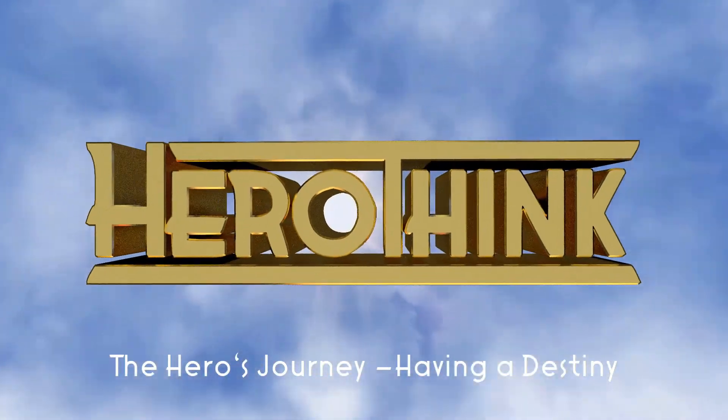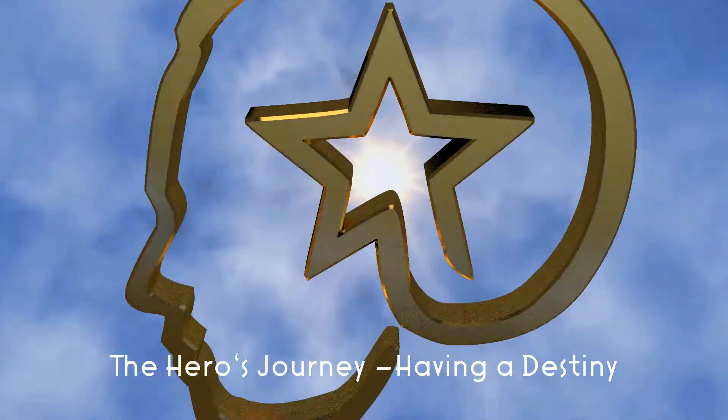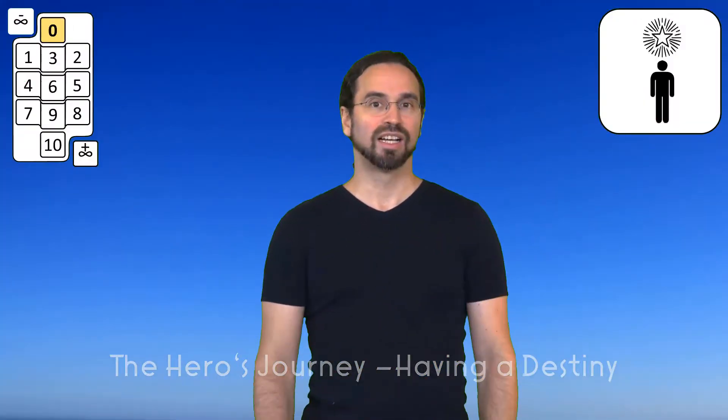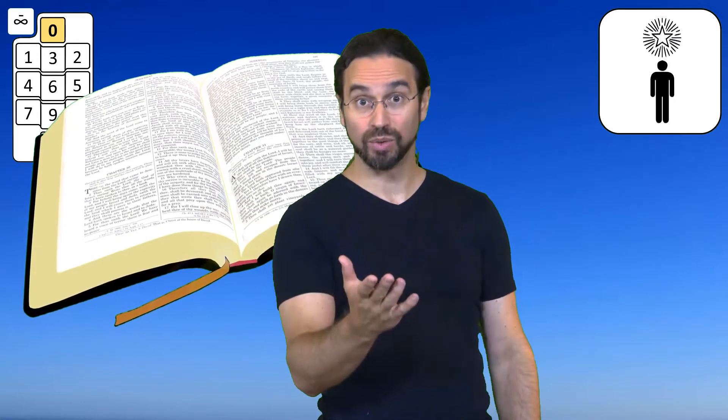In mythology, the hero has a destiny. Do you have a destiny? Stage number zero: having a destiny and the childhood of the human hero. This is the starting point of the entire hero's journey. The symbol we use for this stage is a human being with a star above them, reminding us that you have a destiny.